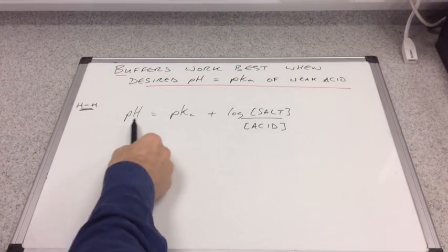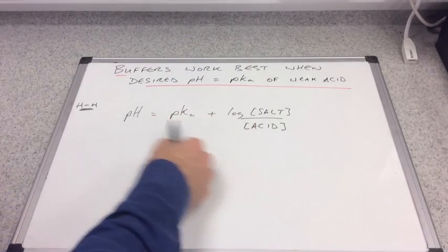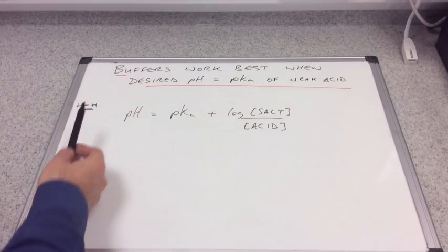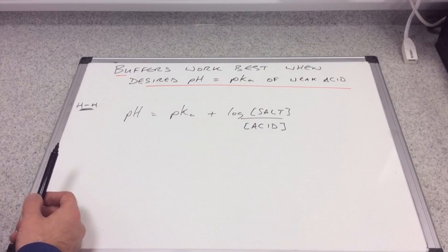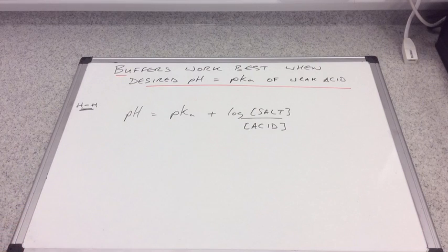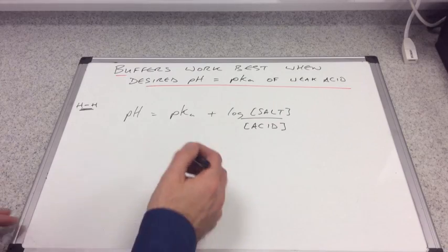There's the Henderson-Hasselbalch equation written up again and we're going to use it to explain this statement: buffers work at their best when the desired pH is equal to the pKa of the weak acid. For example, a lot of skin products are buffered to pH 5.5, so the desired pH is 5.5. Ideally the weak acid used to make that buffer would have a pKa value of 5.5.